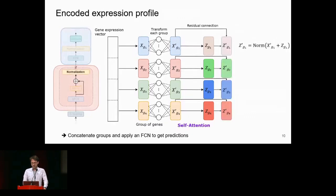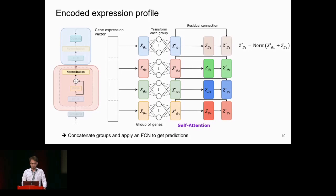At the end of the architecture, we use residual connections to prevent vanishing gradients during training, normalize each group, then concatenate all groups back together into a single vector and pass it to the predictor to get the final prediction.